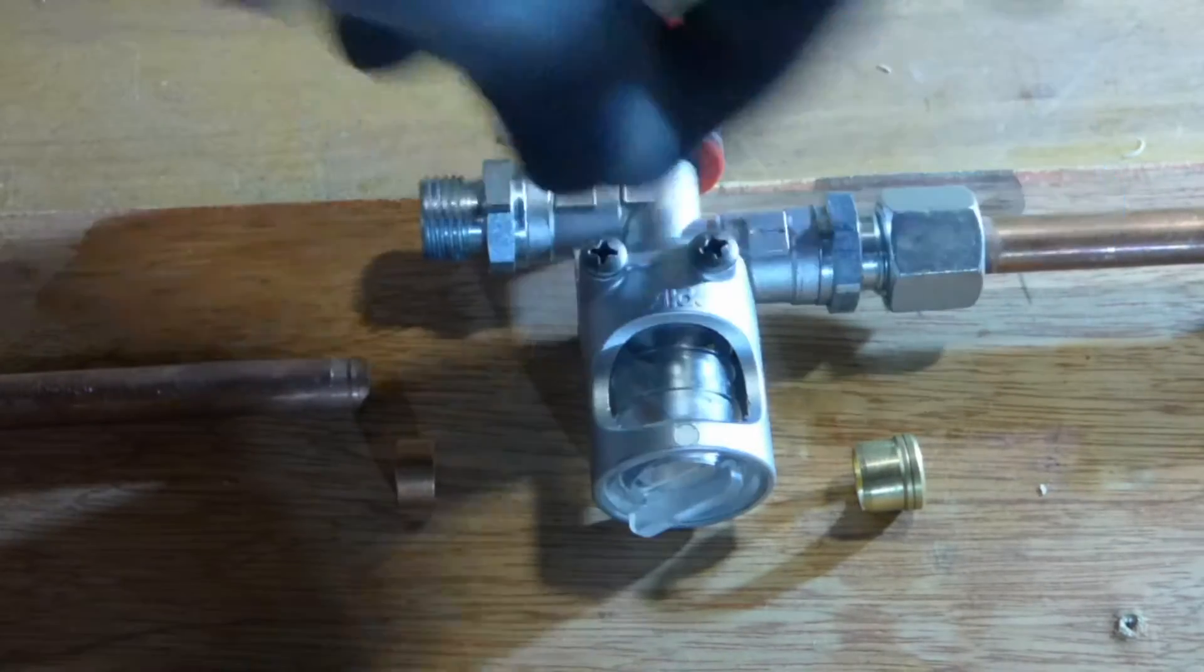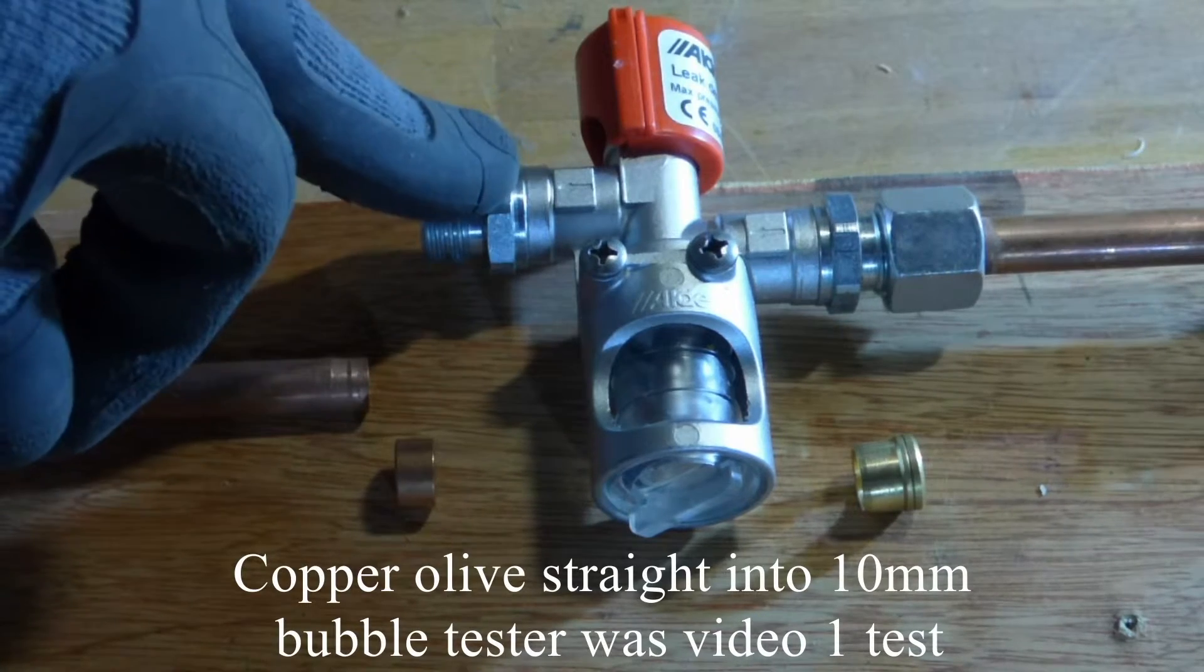This is the olive that's in this pipe here for the 10mm, and this is the olive that's on this pipe for the 3.8.